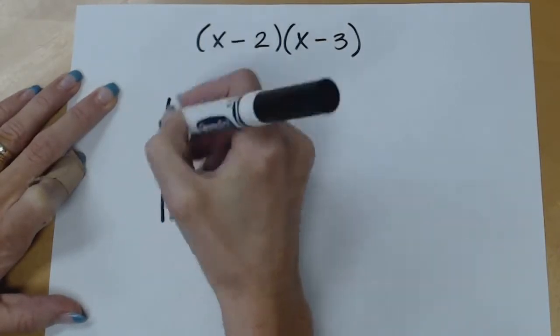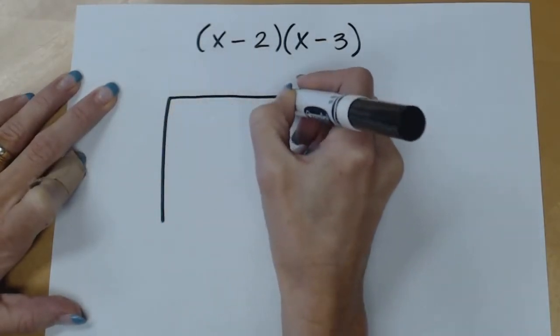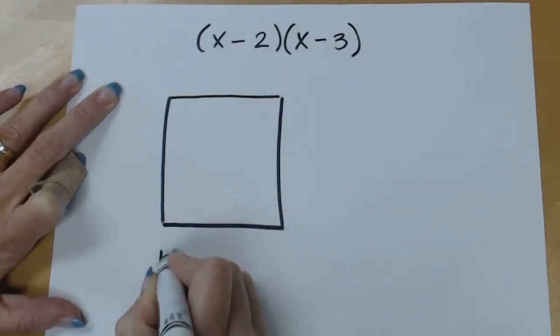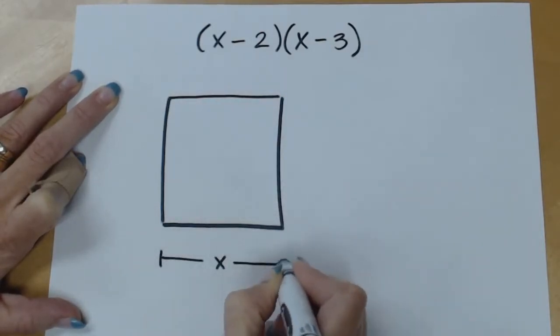Well the first thing I would do is I would start with a square and I would notate the width of each side as an x.